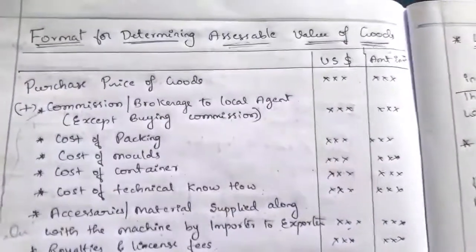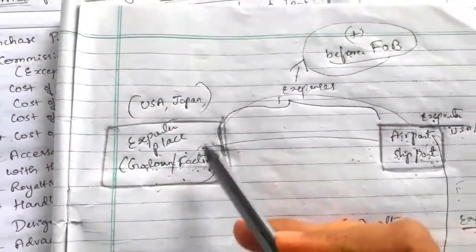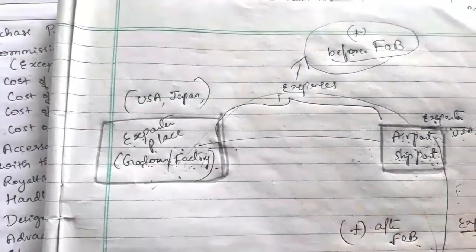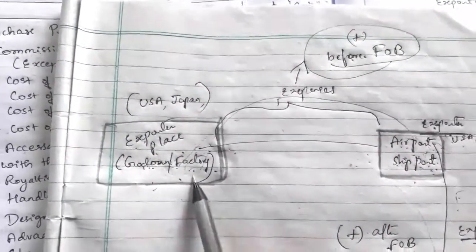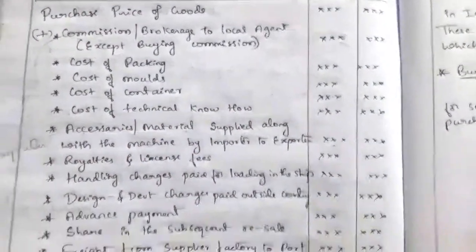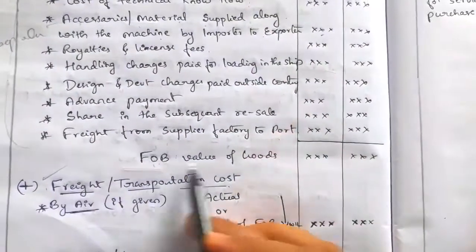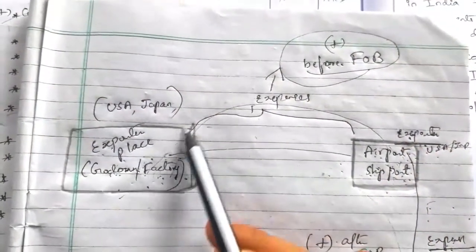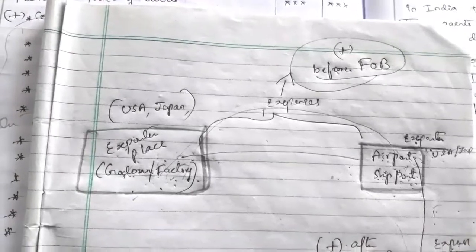Now we will see the format for determining the accessible value of goods. The format starts with the purchase price of goods — that is, the price fixed by the exporter when manufacturing the goods, which the importer pays to purchase them. Next, we add expenses incurred by the exporter, which should be added before FOB, meaning from the exporter's place to the exporter's port.